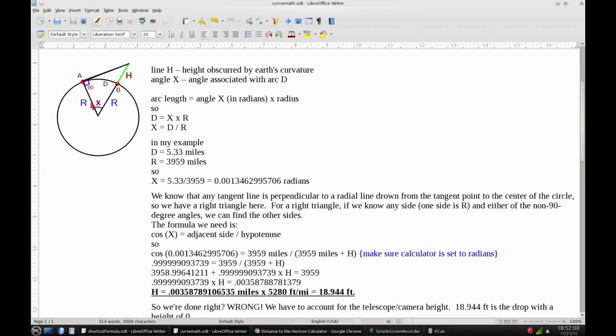Right now we only know one side is R and we need to find angle X. But we can find that because we know this arc D. So the formula for that is arc length equals the angle in radians times the radius. So in this case D equals X times R. If you rearrange that, X equals D divided by R.